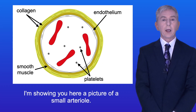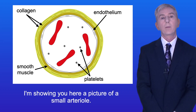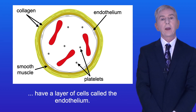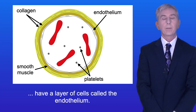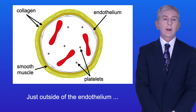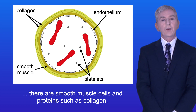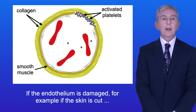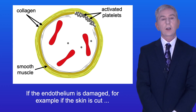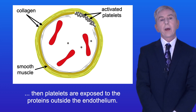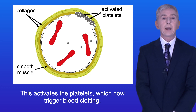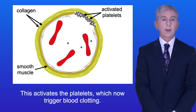I'm showing you here a picture of a small arteriole. Remember that the walls of blood vessels have a layer of cells called the endothelium. Just outside of the endothelium there are smooth muscle cells and proteins such as collagen. If the endothelium is damaged — for example if the skin is cut — then platelets are exposed to the proteins outside the endothelium. This activates the platelets, which now trigger blood clotting.